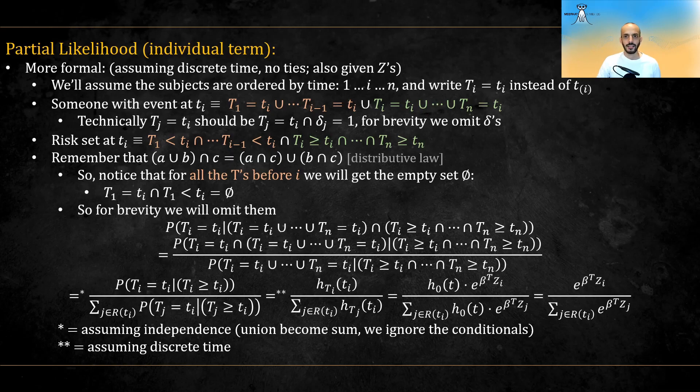Remember that we can describe our data using the t's, the times, and the deltas, a binary variable indicating an event or a censor. Someone with an event at ti can be written like this, either t1 is equal to ti, or t2, or etc etc, or tn.